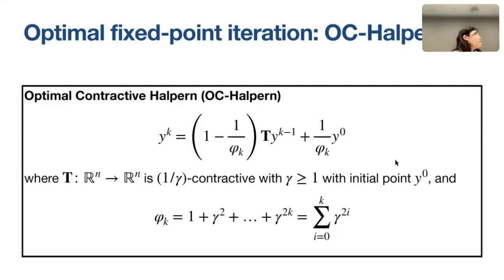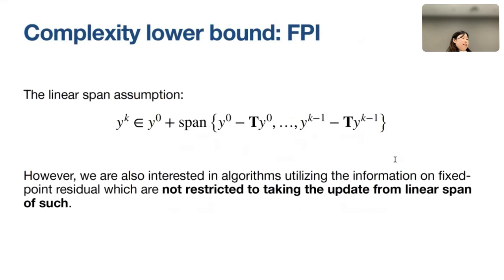Further discussion: once you have a lower bound, you can distinguish optimal methods from sub-optimal ones in theory — whether the gap is a constant factor or an order difference in convergence rate. This theoretical differentiation is the value of having exact complexity lower bounds.